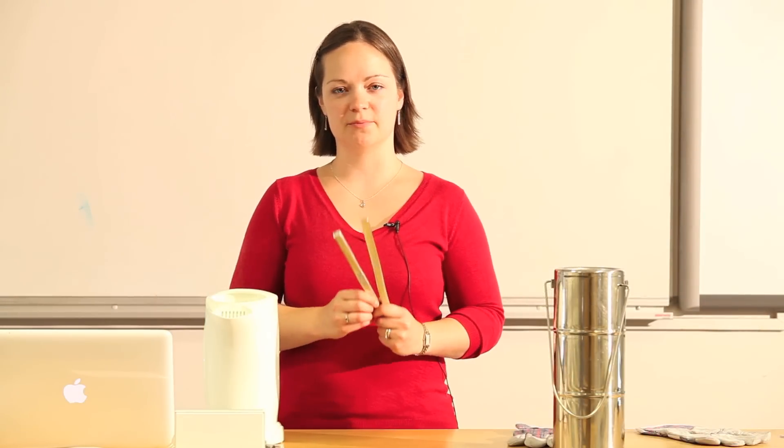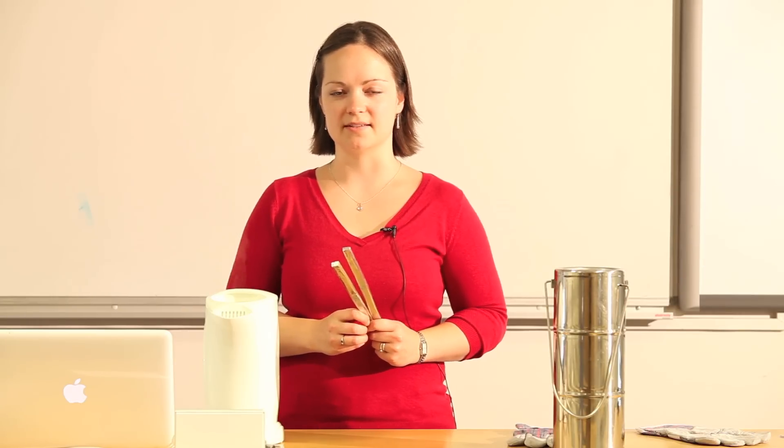In this demonstration, we're going to illustrate deformation twinning using these two bars of freshly cast tin. Tin has a tetragonal crystal structure which is a much lower symmetry than most metals, which makes dislocation motion more difficult and therefore favours deformation twinning.